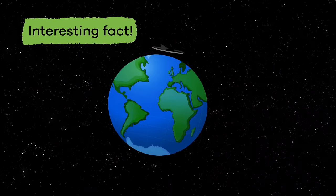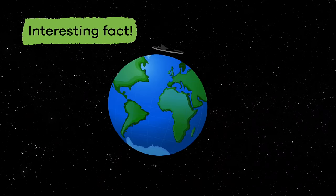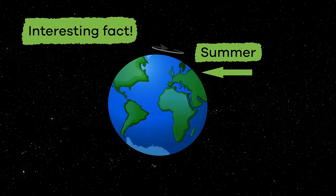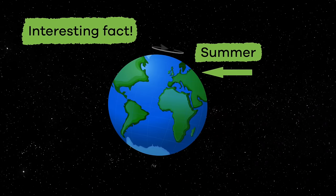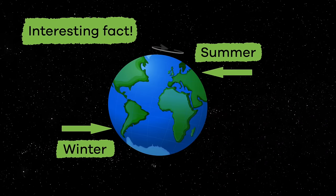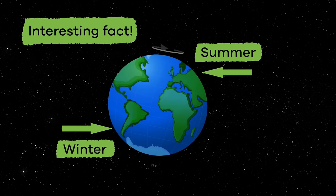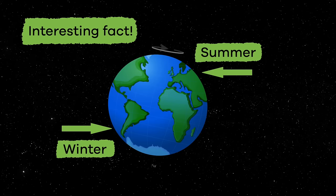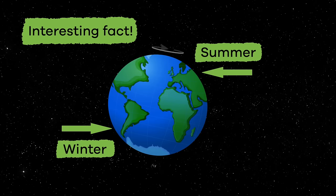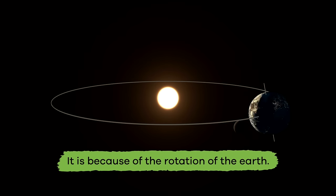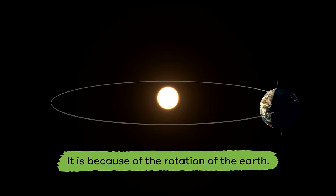Here is an interesting fact. When it is summer in the northern hemisphere, it is winter in the southern hemisphere, and vice versa. And why is that? It is because of the rotation of the earth.